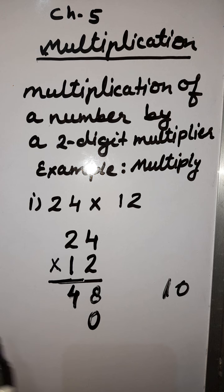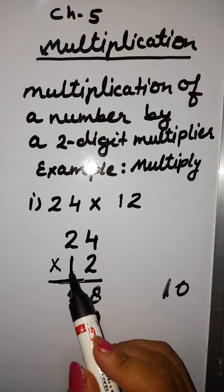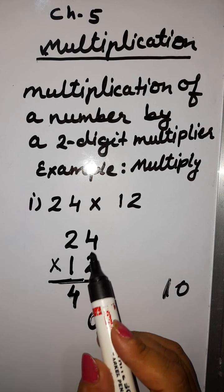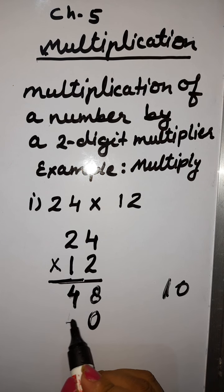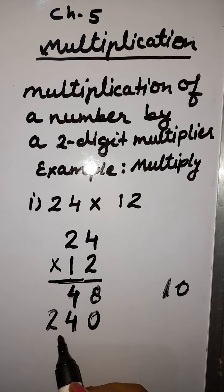Now we will start multiplying 1 in the ones place. 1 four is 4 and 1 two is 2. Understood?